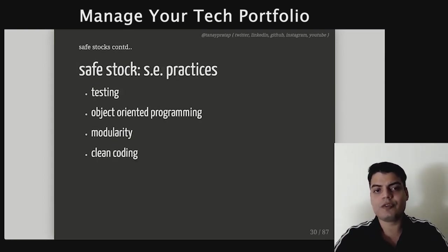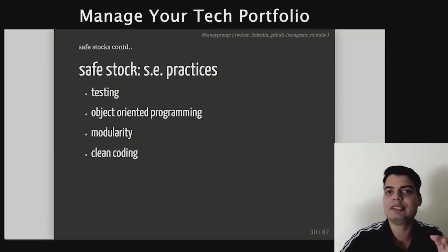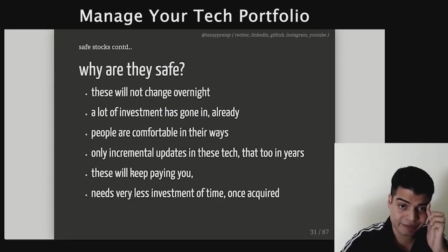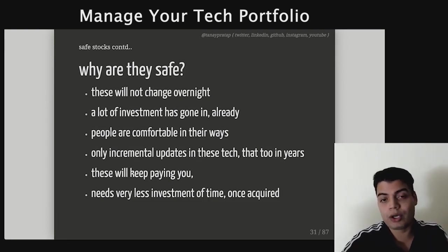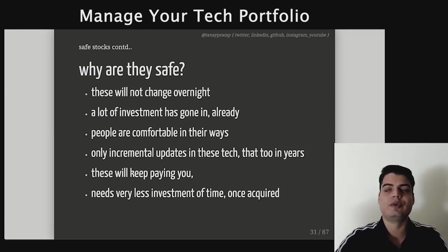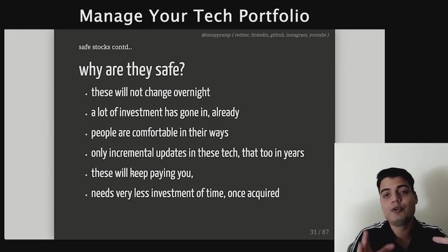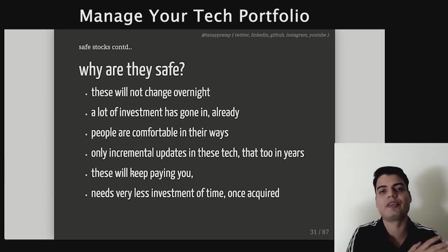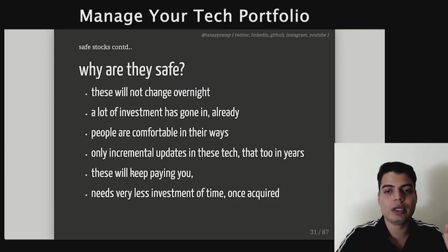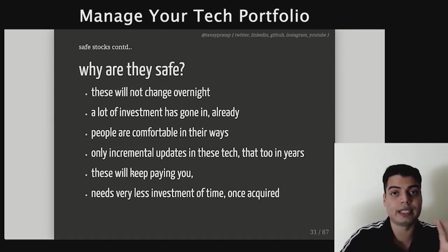Software engineering practices like testing, object-oriented programming, writing modular code, writing clean code — all of these are long-term investments in your career and they pay. Why are they safe? Because they are not going to change overnight. A lot of investment has already gone in — like Microsoft has written a backend in C#, it's not going to change overnight. People would not suddenly start using functional programming just because it's cool, since our brains know object-oriented programming since childhood. There will only be incremental updates, so these will keep paying you and need very less investment of time once learned.